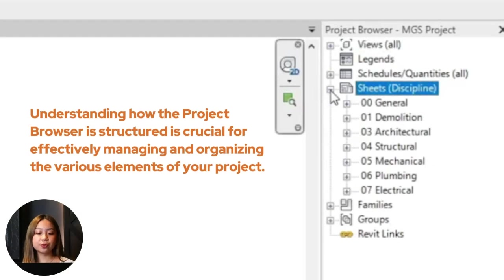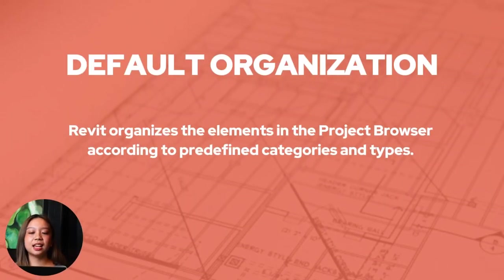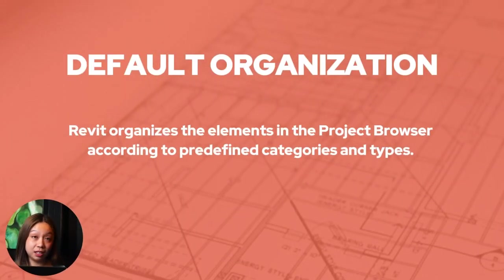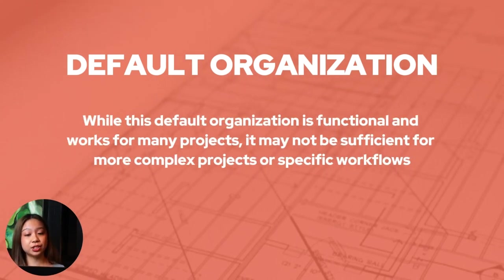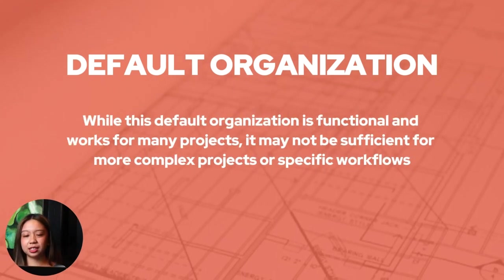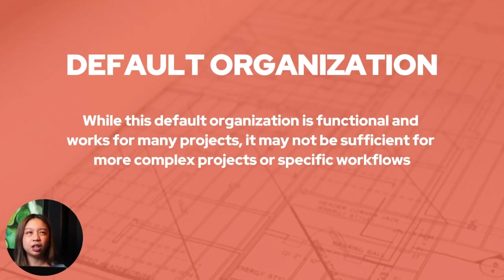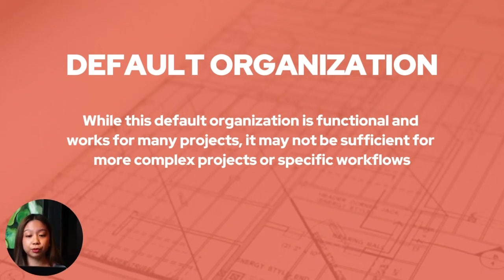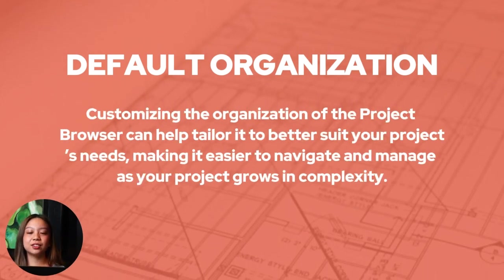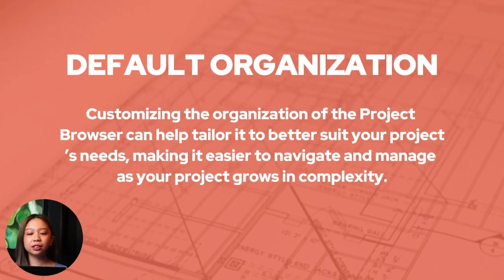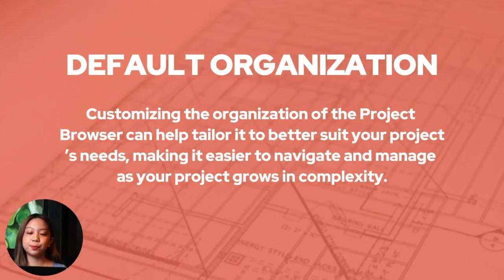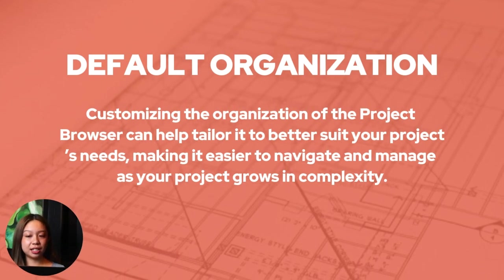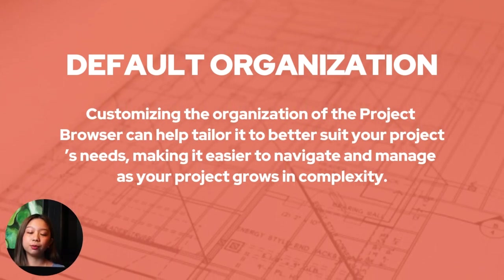Understanding how the project browser is structured is crucial for effectively managing and organizing the various elements of your project. Revit organizes elements in the project browser by default. While this default organization is functional for many projects, it may not be sufficient for complex projects or specific workflows. Customizing the organization can help tailor it to your project's needs, making it easier to navigate and manage as your project grows in complexity.